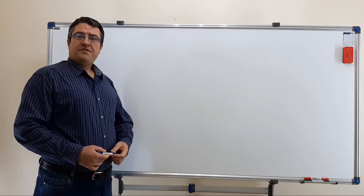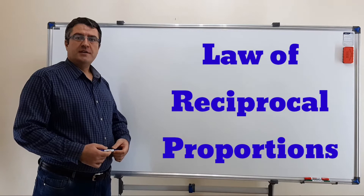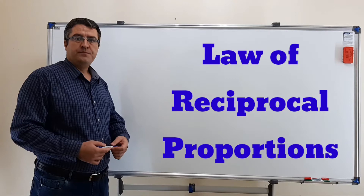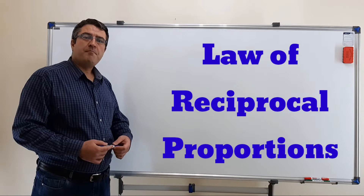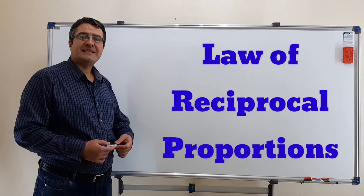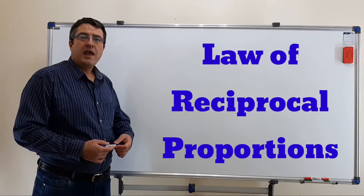The law of reciprocal proportions, also known as the law of equivalent proportions, is about proportions of masses by which two chemical elements combine with each other and with a fixed mass of a third element. It can be stated as: the proportion of masses by which two elements combine with each other and the proportion of masses by which those two elements combine with a fixed mass of a third element are the same, or a ratio of small whole numbers.